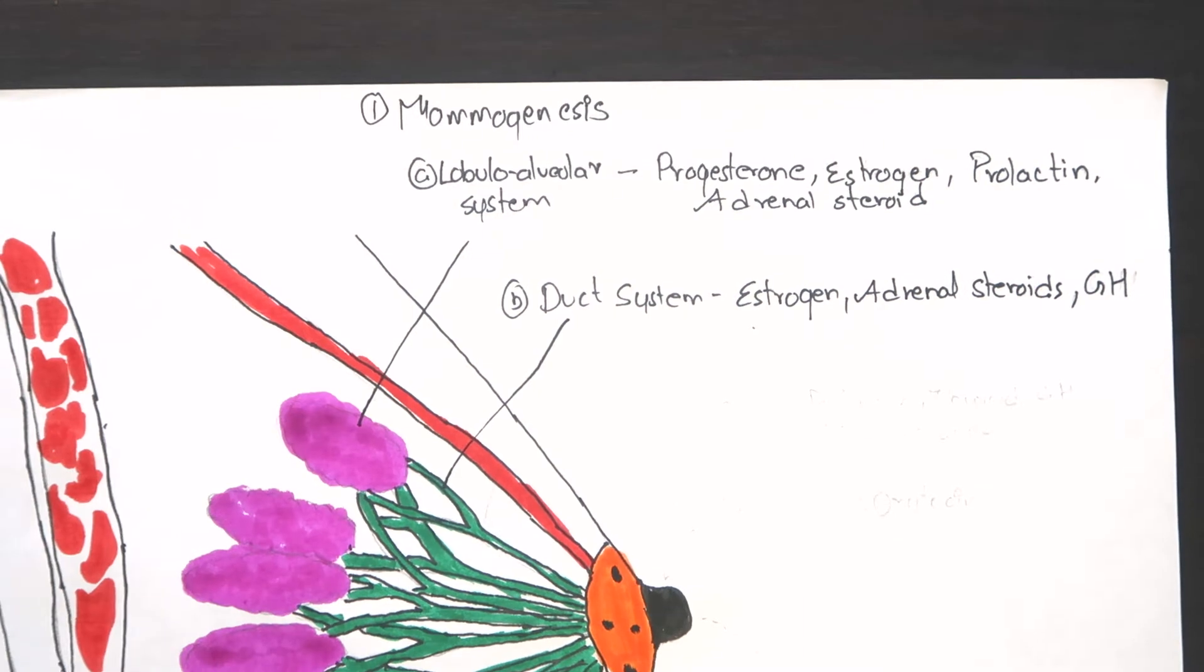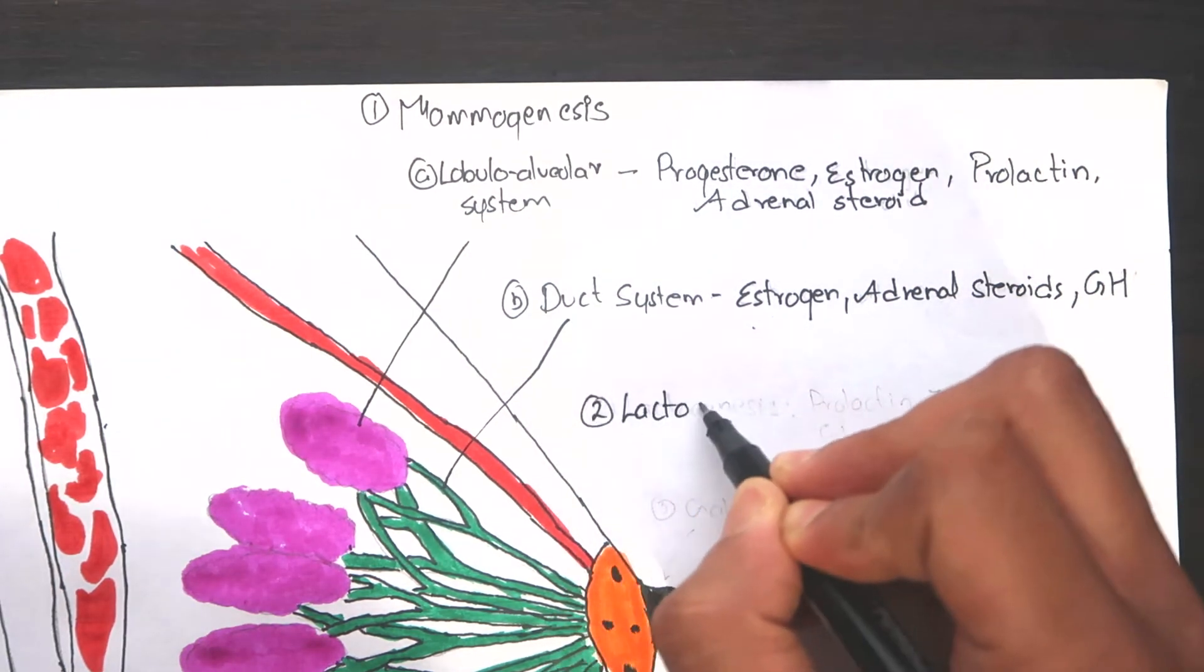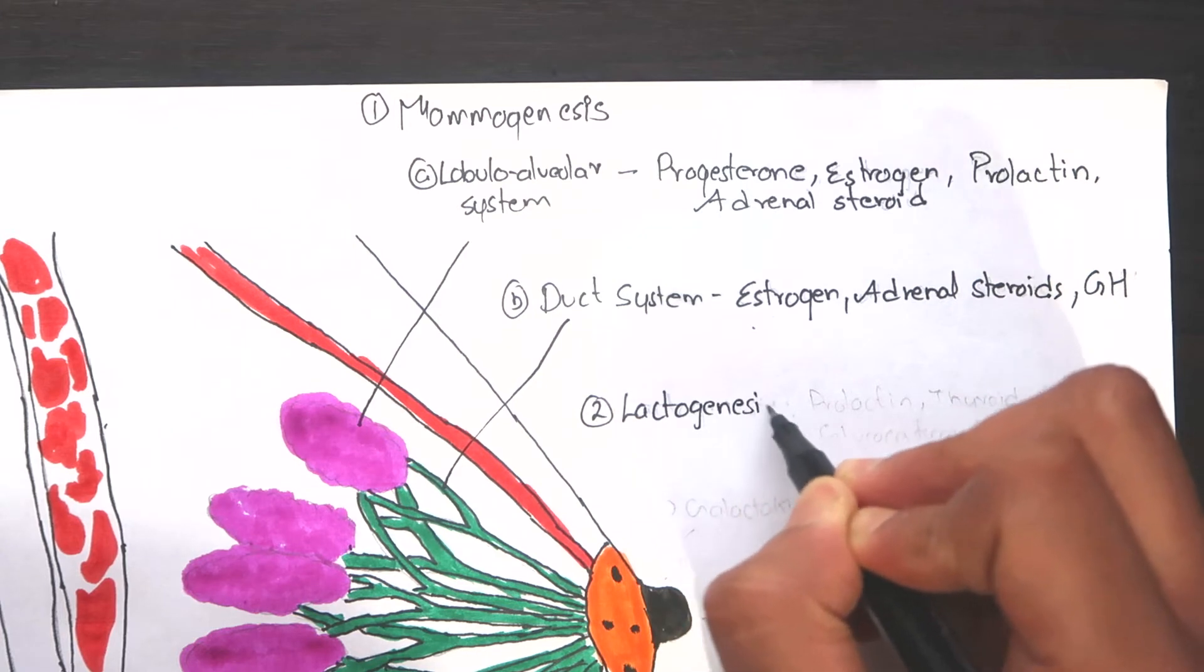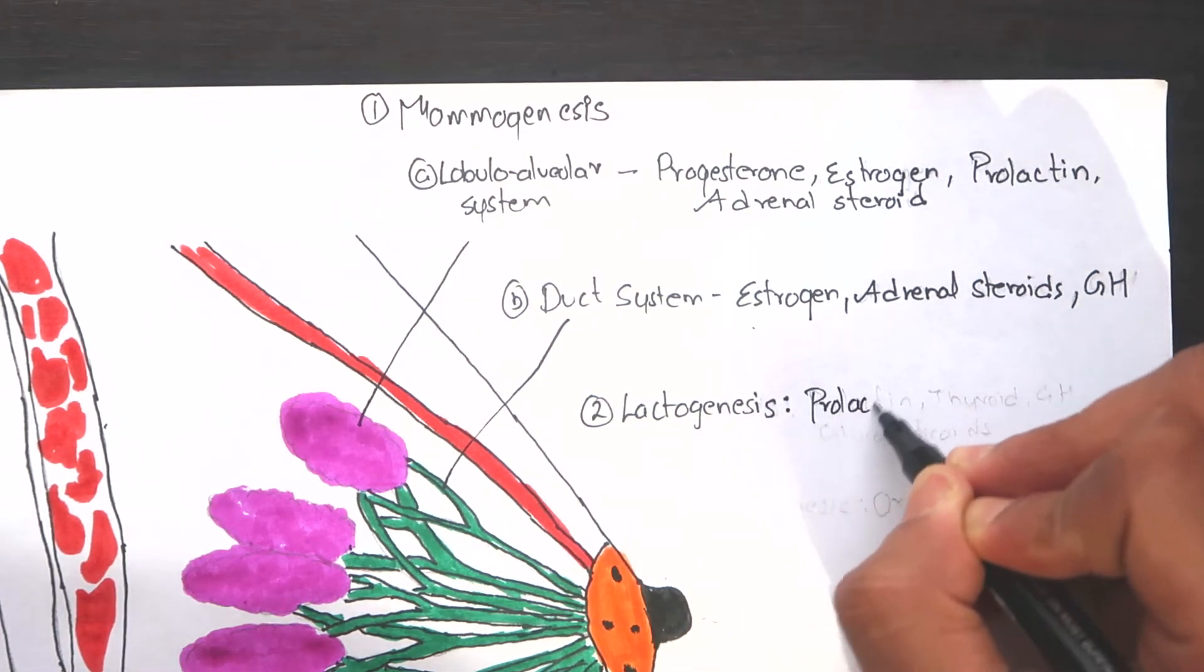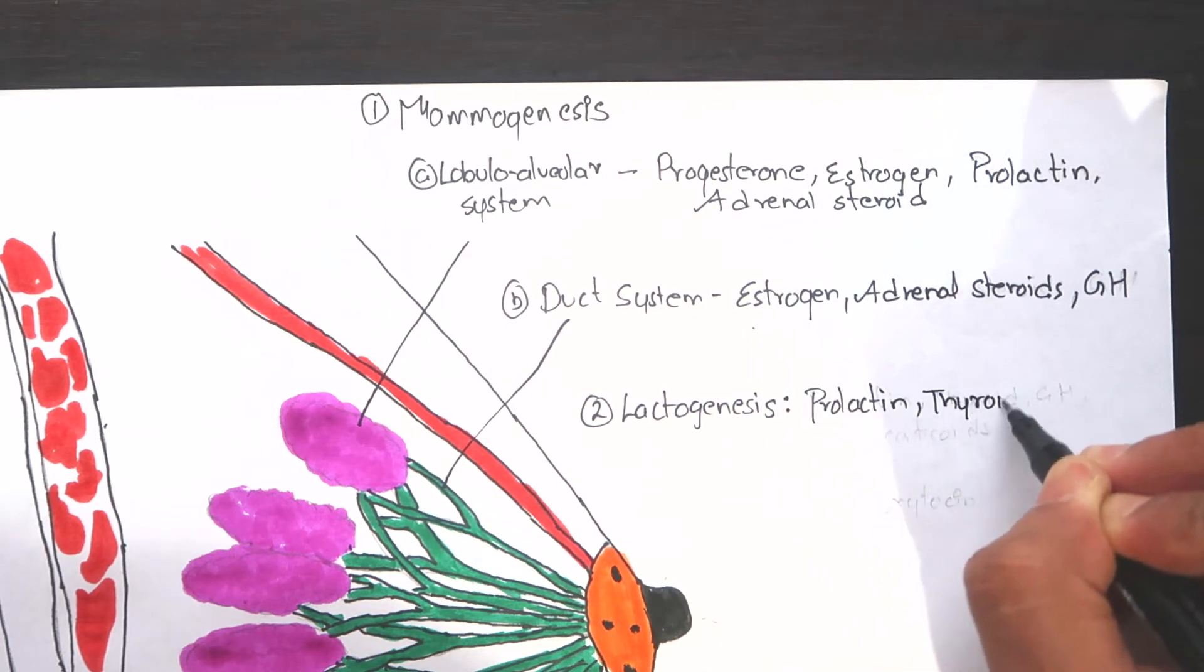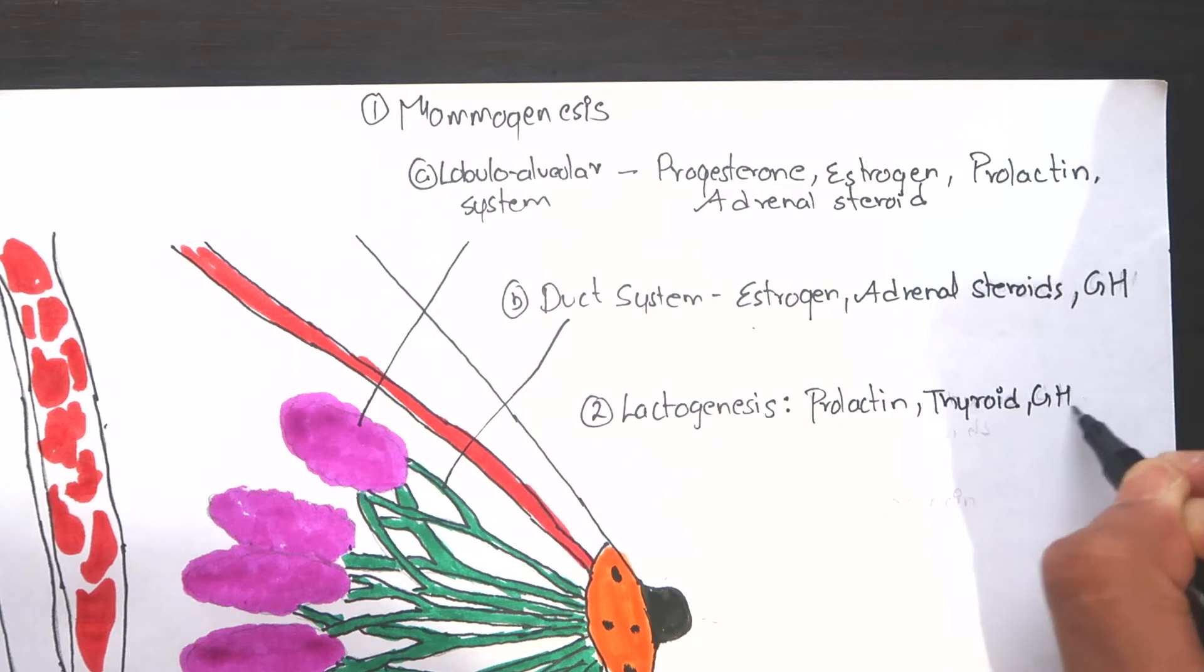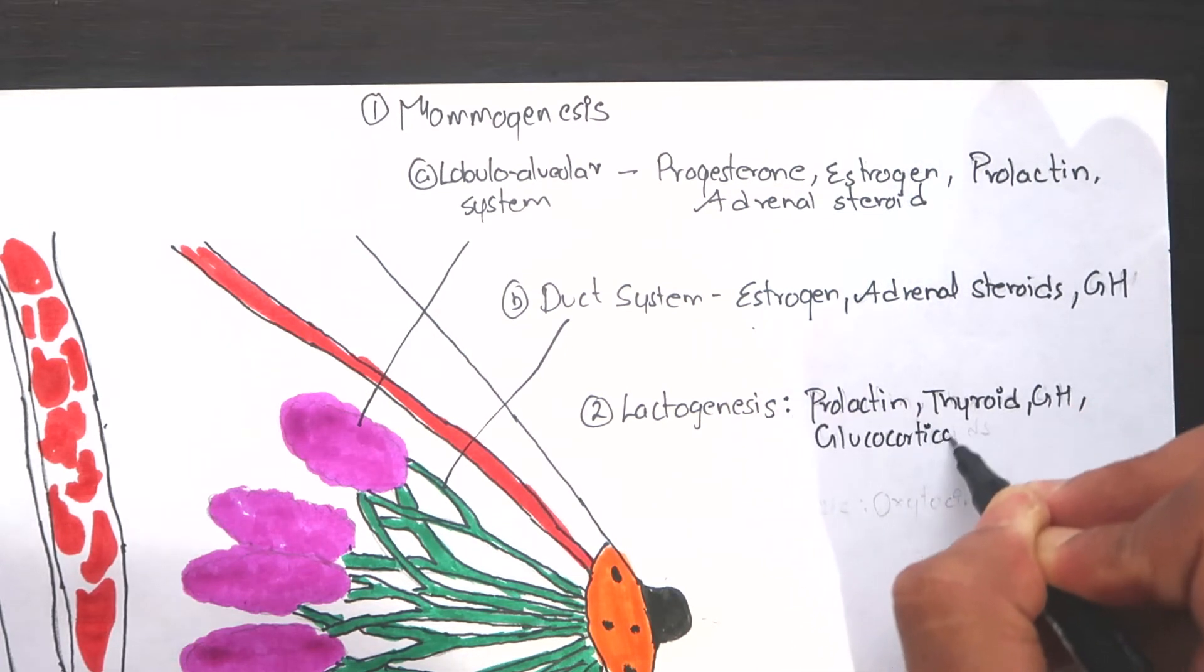Second, lactogenesis or synthesis and secretion from the breast alveoli. The alveolar cells are the principal sites for production of milk. The hormones responsible are prolactin, thyroid hormone, growth hormone, and glucocorticoids.